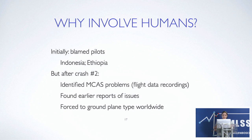Initially after the first crash, the pilots were used as scapegoats — it's easier to blame people than to believe there's a problem with the system. But after the second crash, they looked deeper and realized it was yet another example of why involving humans is critical in all design processes. If there had been a light letting the pilots know the system was on, they could have easily re-engaged it and there would have been no problem.